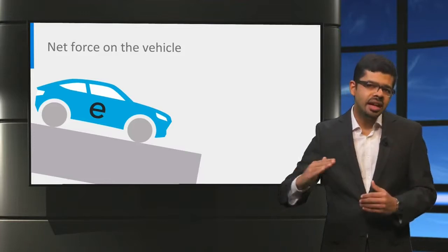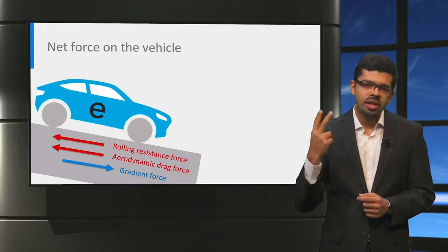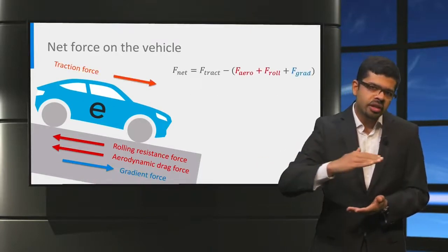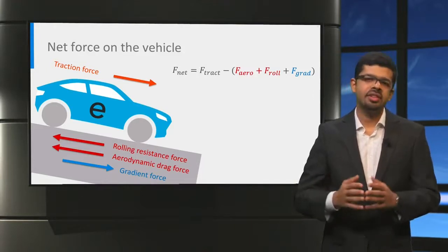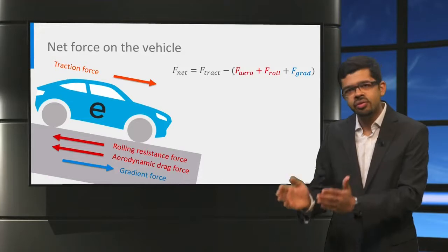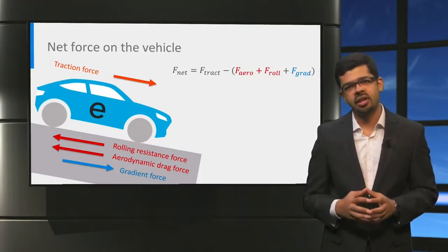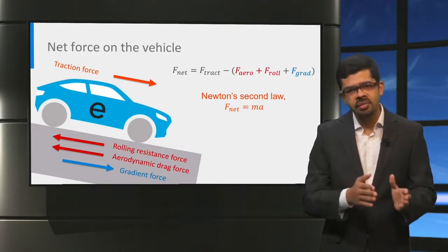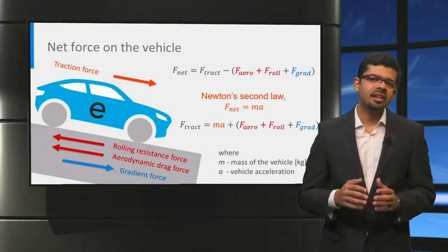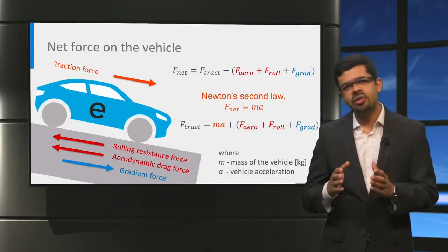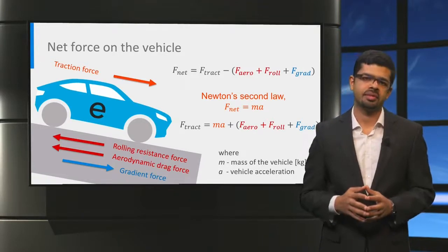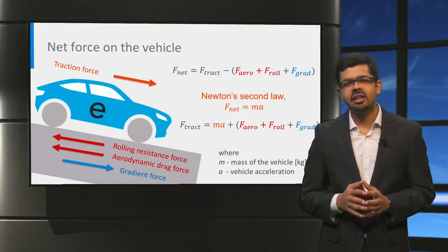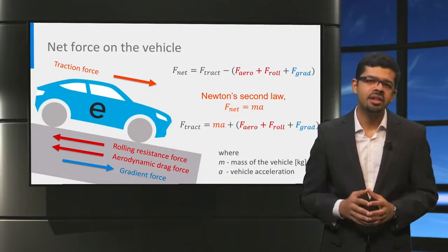If we consider a vehicle moving on an inclined surface, then the aerodynamic drag force, the rolling resistance force, and the gradient force all act on the vehicle. Including the traction force provided by the powertrain, the net force F_net is the difference between the traction force and the sum of the aerodynamic drag, rolling resistance, and road gradient forces. By Newton's second law, the net force equals the product of vehicle mass and acceleration. Therefore, we can control vehicle acceleration and speed by controlling the traction force. The traction force is in the driving direction most of the time, but can be zero during coasting or negative during regenerative braking.